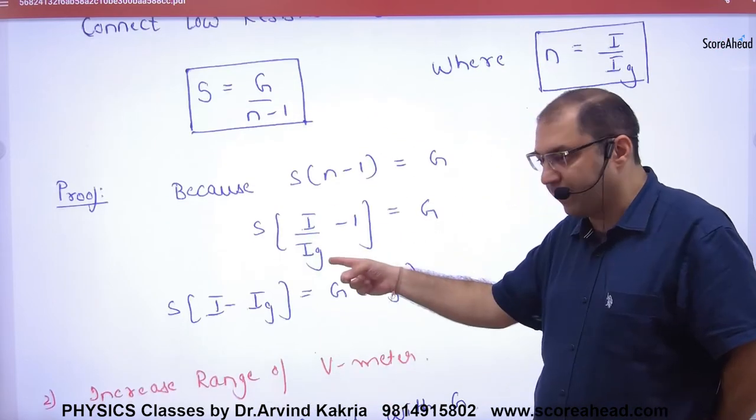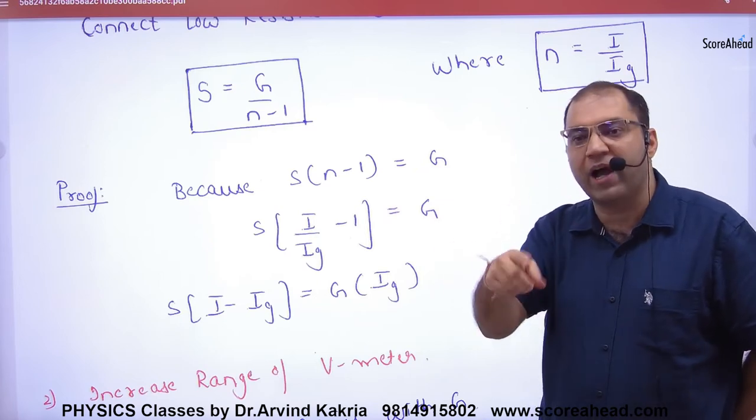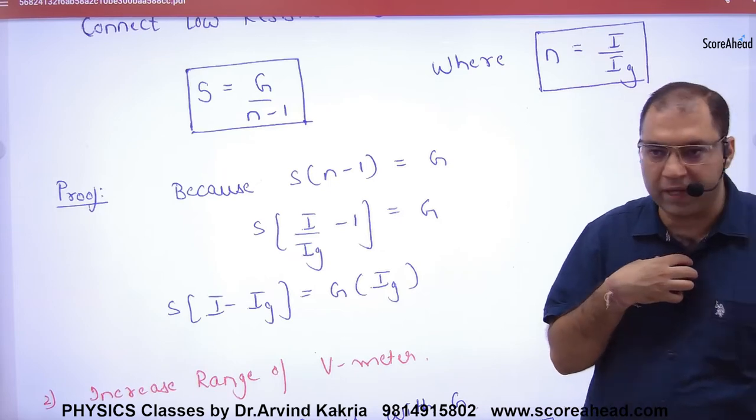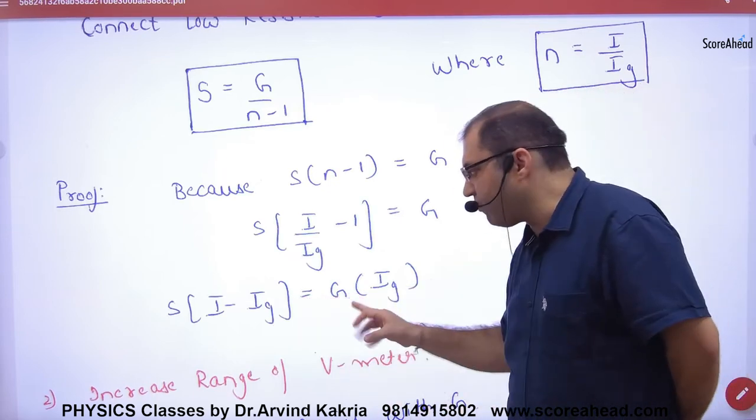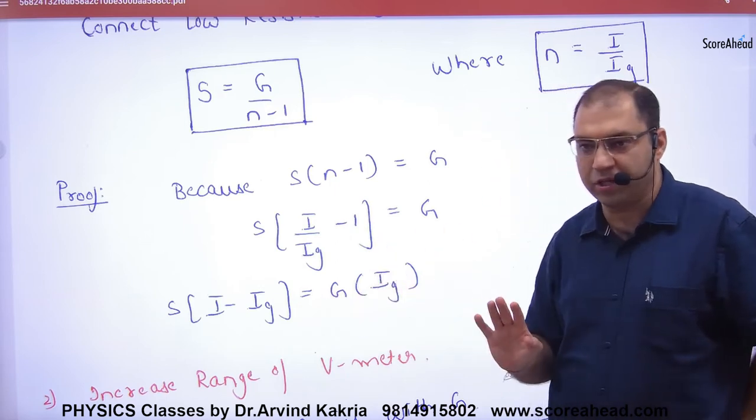when we solve it, the shunt formula becomes (I_G × G) / (I - I_G), which we have already derived. So in our course, when we discussed this last time in the lecture, we remembered this formula: shunt equals (I_G × G) / (I - I_G).